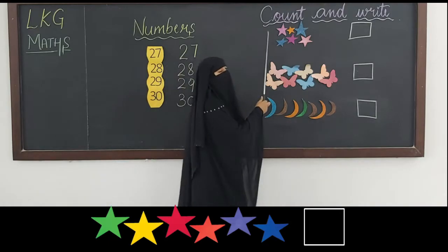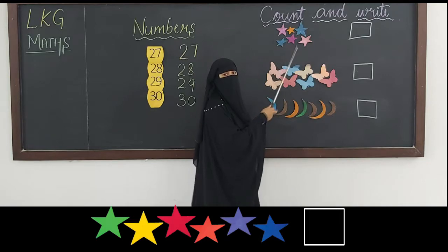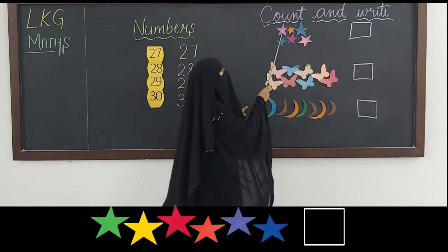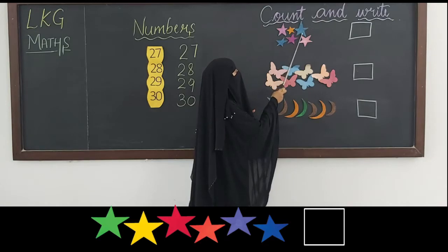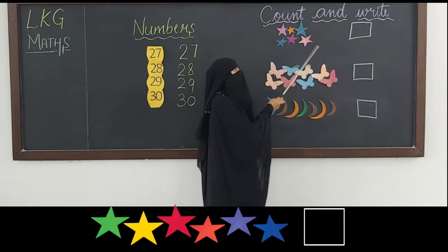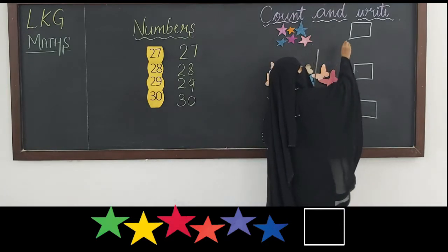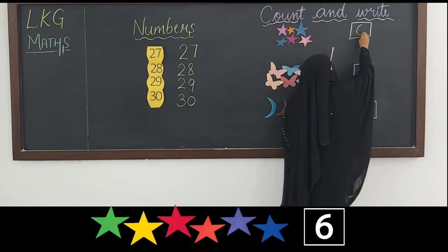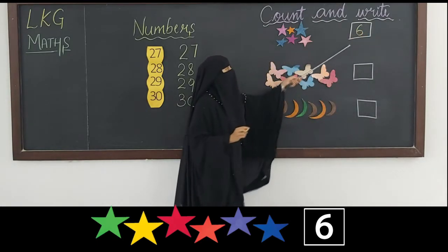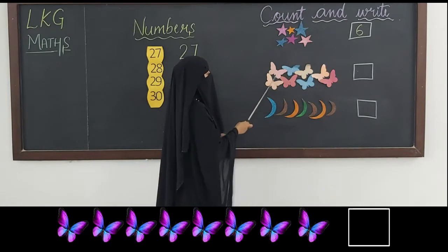Now what do we have here? We have stars, butterflies, and moons. This is a count and write activity. Let us count the stars and write the numbers. 1, 2, 3, 4, 5, 6. How many stars do we have altogether? There are 6. We have to write 6 in the box.